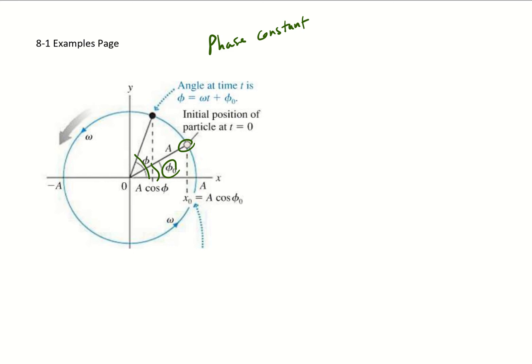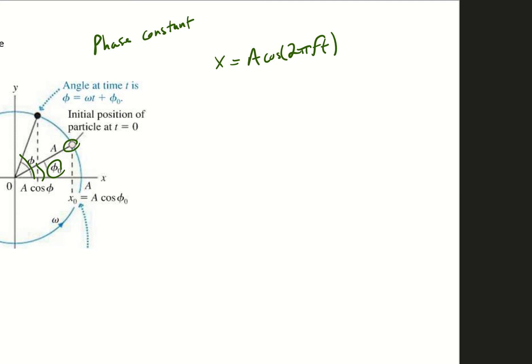Before we get into the specifics of the phase constant, let's come back to this equation on its own for a second. We know that it's normally 2πf times t — that's our standard. But omega is equal to 2πf on its own; omega is just a conversion from the frequency. So when we look at this equation, we're really looking at x equals A times cosine of omega times t.